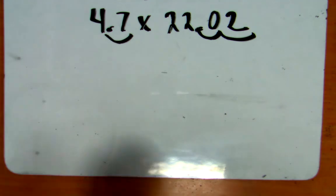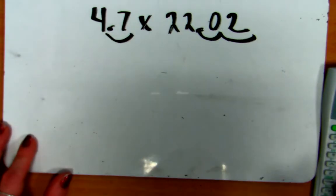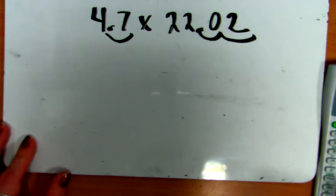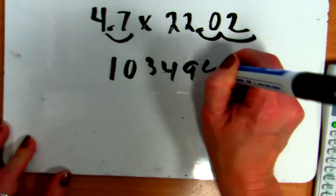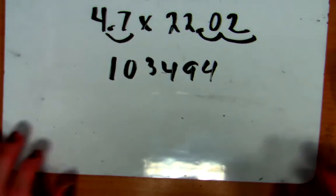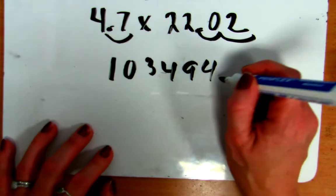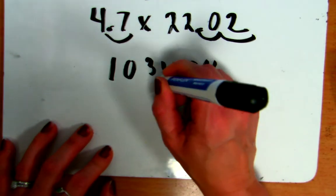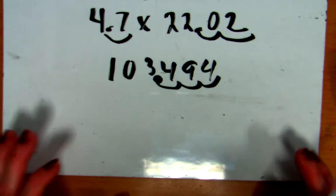And now, of course, I cannot remember what my number was. 47 times 2202. 103494. So, I've got my 2, 1, 2 decimal places here. 1 decimal point there. And that means I have to put 3 back in. And lo and behold, we end up right at 103.494 again. So, we've gotten to the same answer.